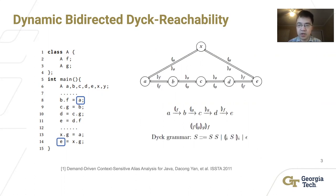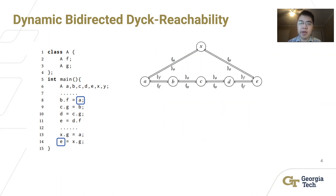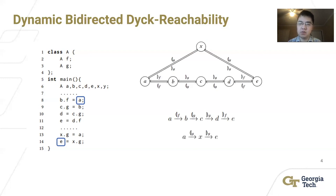A path is a Dyck path if the edge labels along the path form a word in the Dyck language. The Dyck language has the following grammar, which represents the set of all matched parentheses strings. Before we make any changes to the code, there exist two Dyck paths from node A to node E in the graph. One goes from node A to B to C to D and finally to node E. The other Dyck path goes from node A to node X, then node E.